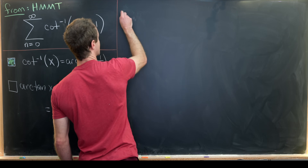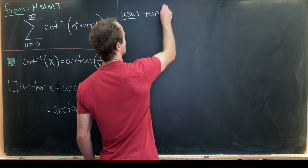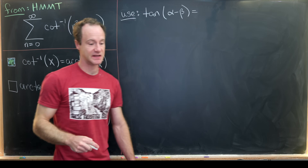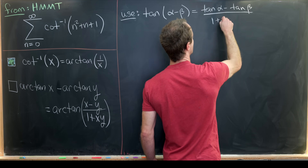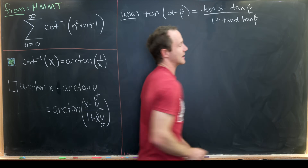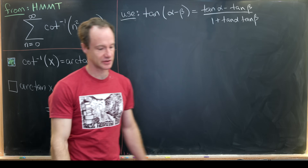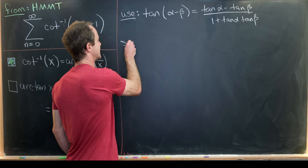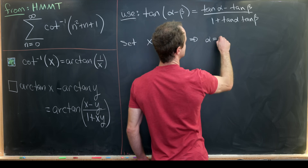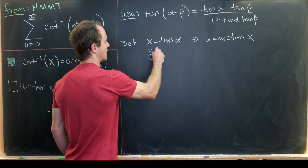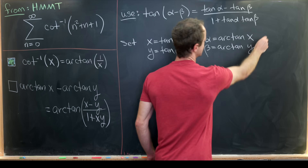We'll start with the difference angle formula for tangent: tan(alpha minus beta) equals (tan alpha minus tan beta) over (one plus tan alpha times tan beta). Now we rewrite this in terms of the inverse function. We set x equal to tan(alpha), so alpha equals arctan(x), and y equal to tan(beta), so beta equals arctan(y).